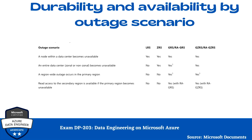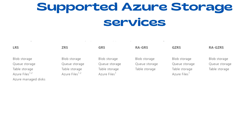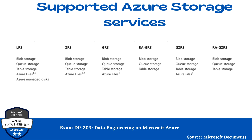Next comes the durability and availability outage scenario. On the left-hand side of your screen, you can see all the outage scenarios — for example, a node within a data center becomes unavailable — and what redundancy option you can or cannot use. Please pause your screen and have a look. There is also a screen showing the supported Azure storage services for each redundancy type — what you can use with LRS, ZRS, GRS, and others — whether you are using block, queue, table, Azure Files, or Azure Managed Disk. Be aware of which redundancy option is supported for each service.